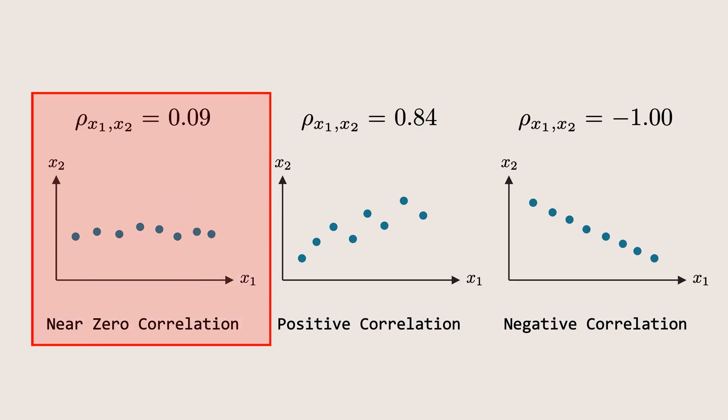If the correlation is close to 0, like in our first dataset, it means two features have little to no relationship.